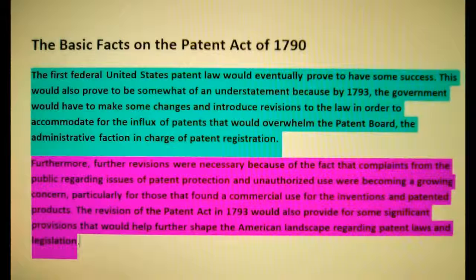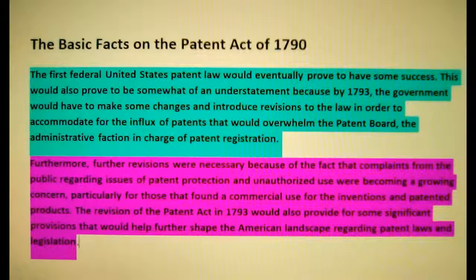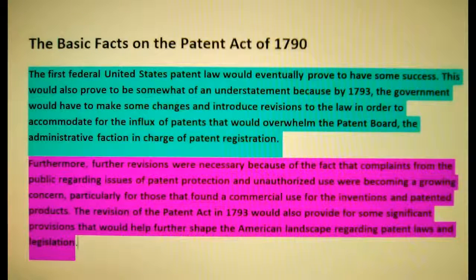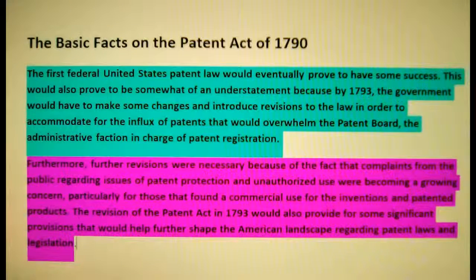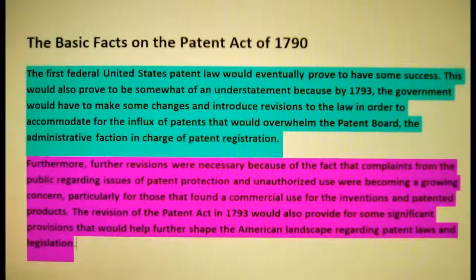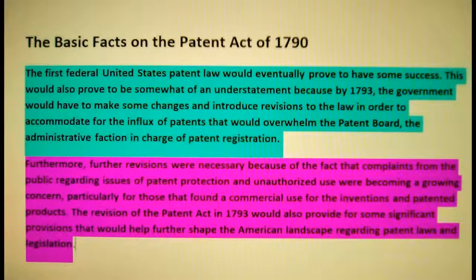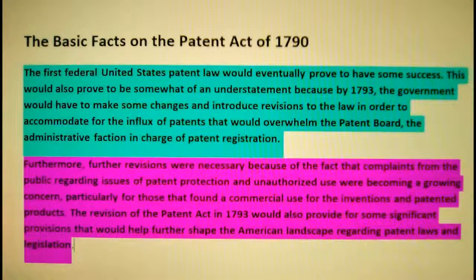The first federal United States patent law would eventually prove to have some success. By 1793, the government would have to make some changes and introduce revisions to the law in order to accommodate the influx of patents that would overwhelm the Patent Board — the administrative faction in charge of patent registration. Further revisions were necessary because of complaints from the public regarding issues of patent protection and unauthorized use, which were becoming a growing concern, particularly for those that found commercial use for the invention and patented products. The revision of the Patent Act in 1793 would also provide for some significant provisions that would help further shape the American landscape regarding patent laws and legislation.